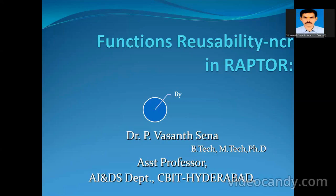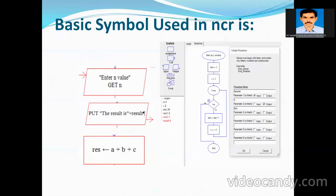We are computing n factorial divided by r factorial into n minus r factorial using RAPTOR. Including the basic input/output symbols, we are using a procedure — the procedure name is 'factorial' — which takes one parameter n. We find the factorial for the given number using an iterative approach, and once it finds the factorial it returns the result as the 'fact' variable. These are the basic symbols we are using here.